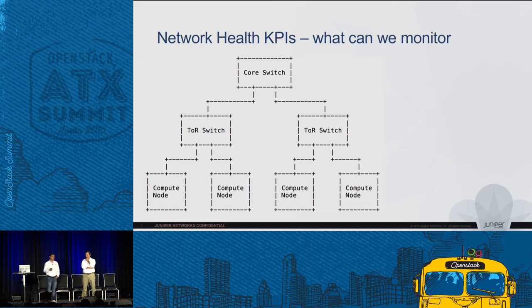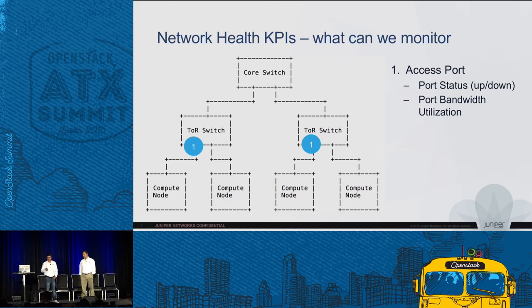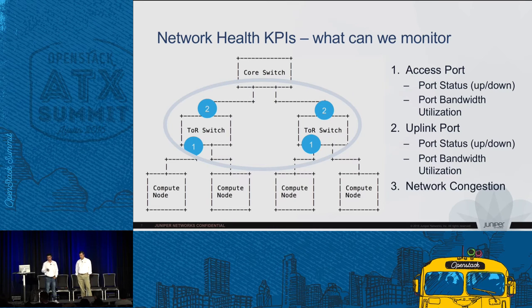Looking at the typical OpenStack installation connected to various levels of switches — top-of-rack switches and the core switch — let's consider what physical network attributes impact VM connectivity. At the first level, compute nodes are connected to top-of-rack switches, so bandwidth available on the access port and whether the access port is up or down are critical. Similarly, at the second stage, the uplink port from the TOR to the core switch introduces additional factors: network connectivity, congestion, and available bandwidth.